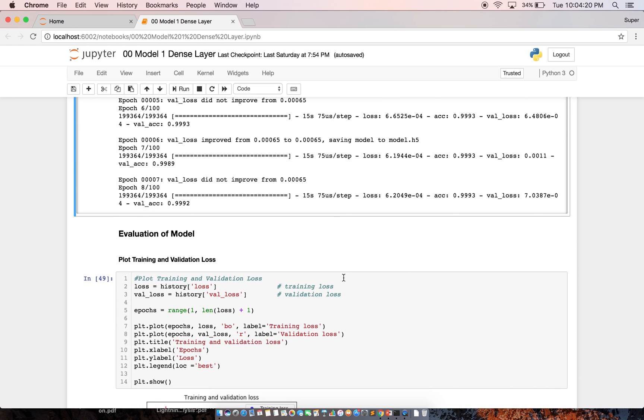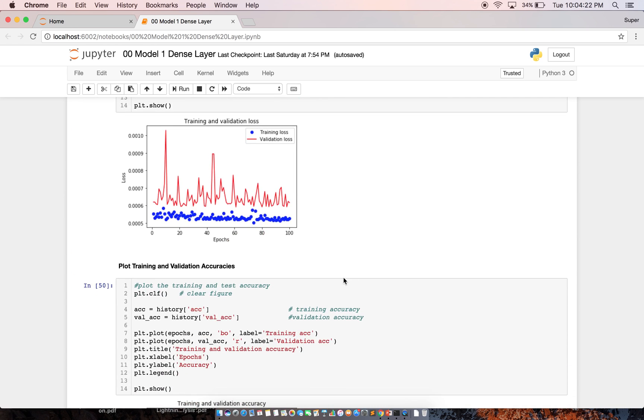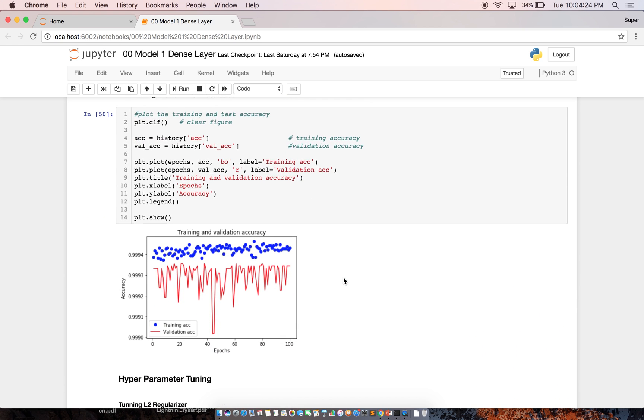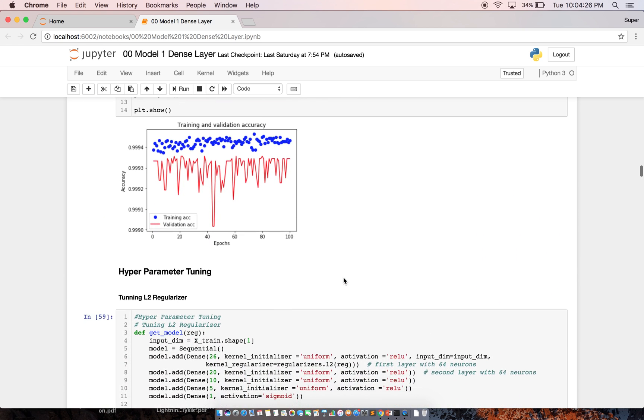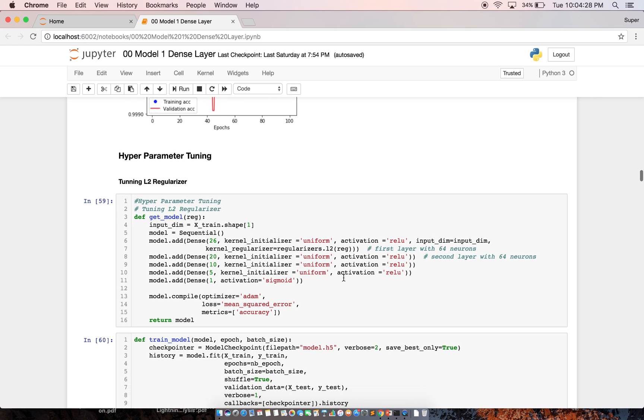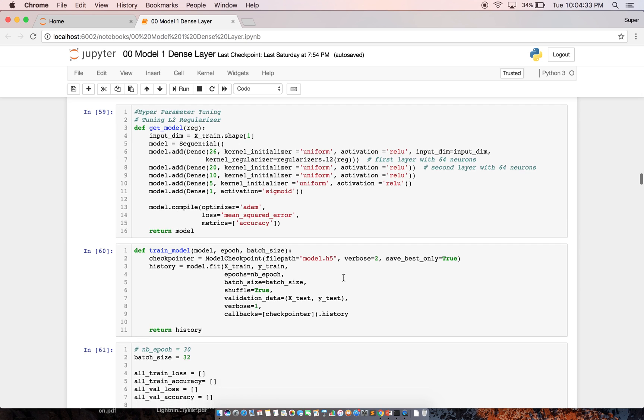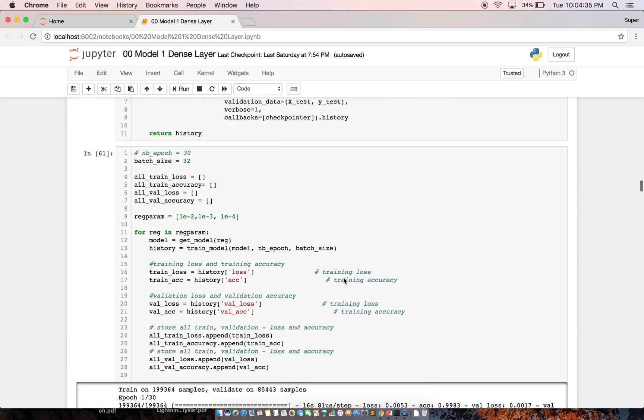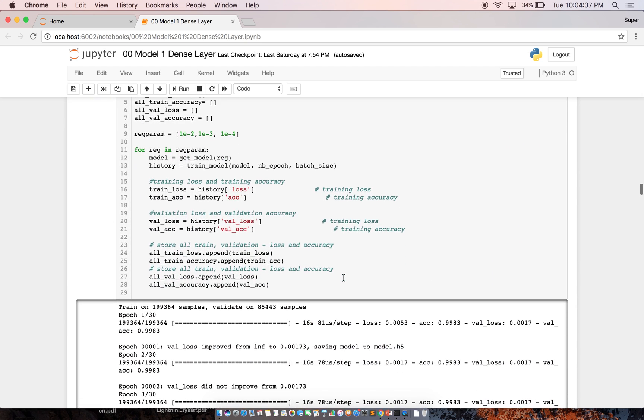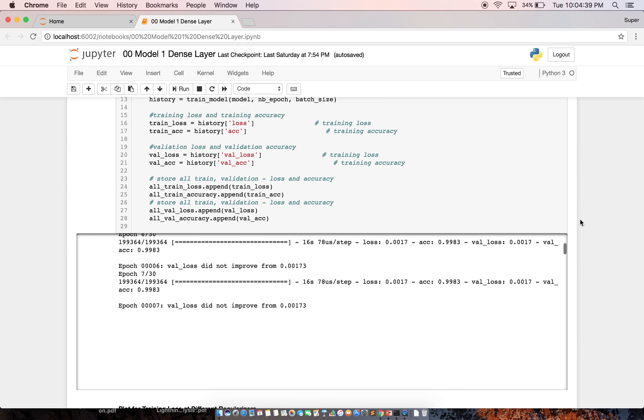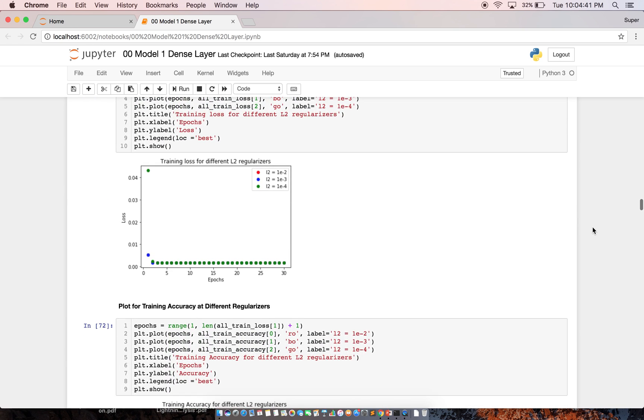After training, I observed the training and validation loss, training and validation accuracy. And I did hyperparameter tuning. I tuned my L2 regularizer parameters. I defined three different L2 regularizer parameters and observed the loss and accuracy for all three regularizers.